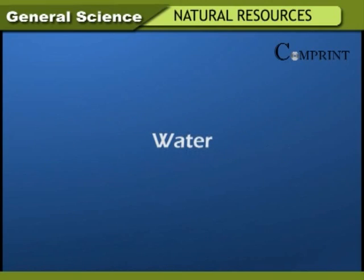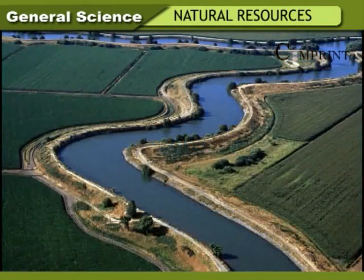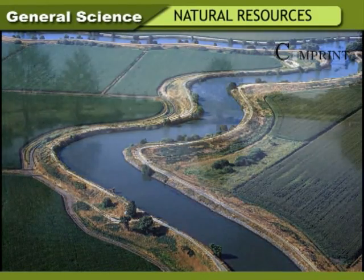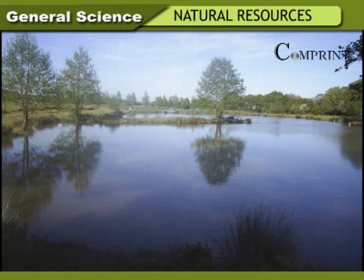Water constitutes 70% of our earth's surface. It is in the form of sea, river, lake, pond, and also as moisture in the atmosphere.